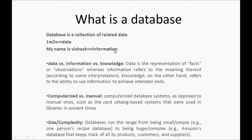Not every data is information, but every information is data. Data is the representation of facts or observations, whereas information gives meaning to the user. That is the difference between data and information.